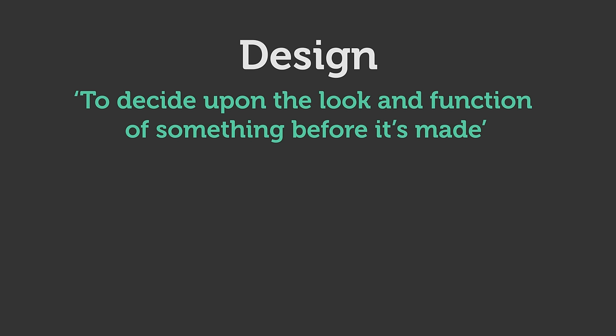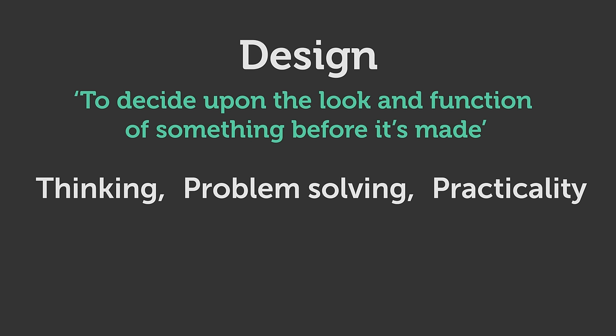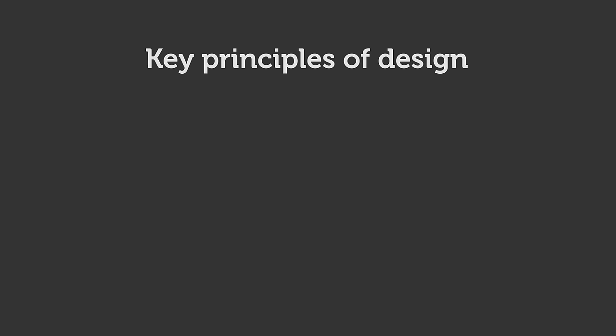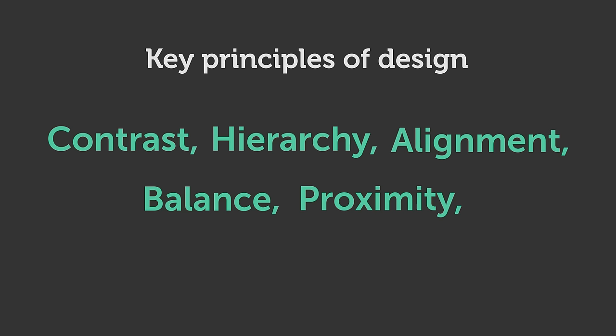The second part is design, which is to decide upon the look and function of something before it is made. So design is thinking, problem solving and practicality — theory. In graphic design there are rules that can be considered; these rules are called the principles of design. These principles all have a relationship between each other and appear in every well-designed piece of work you see. The key principles of design are: contrast, hierarchy, alignment, balance, proximity, repetition, simplicity and function.